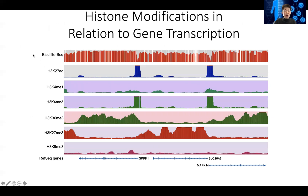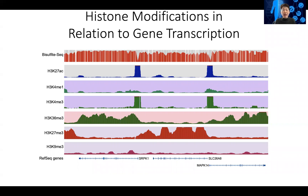If you look at epigenetic profiles across the genome, there could be some regions that have bisulfite sequencing signals across the genome. If you look at H3K27 acetylation, you can see it's much weaker across the genome, but then in certain regions it's suddenly stronger. Because DNA methylation normally silences gene transcription, interestingly when DNA methylation signal is much weaker, H3K27 acetylation is active and stronger.